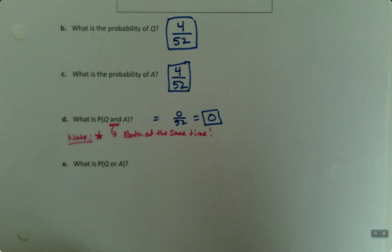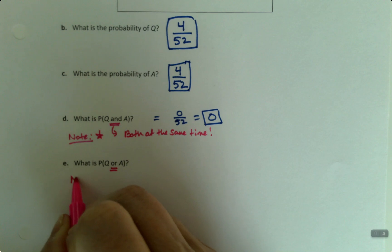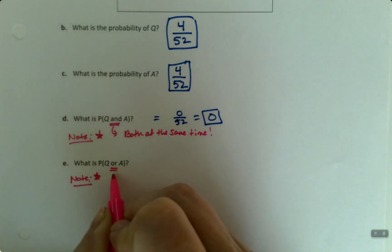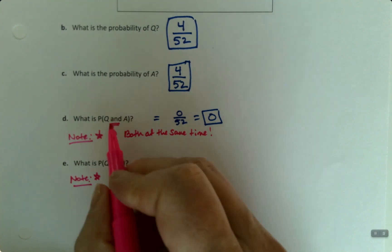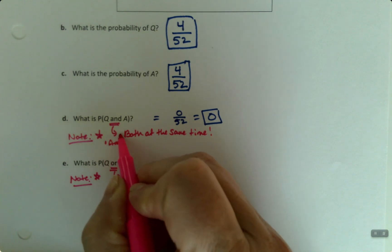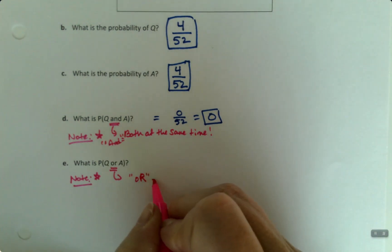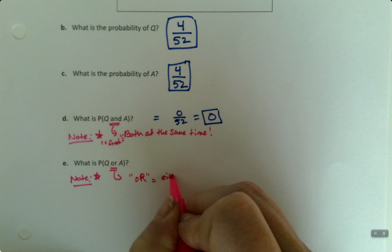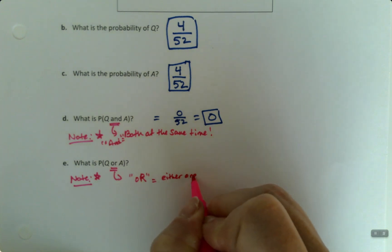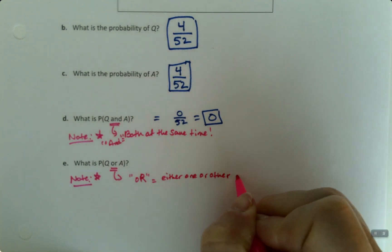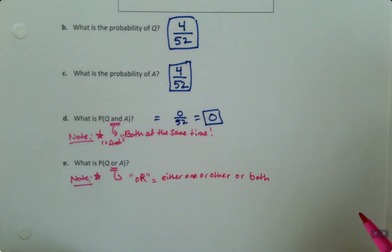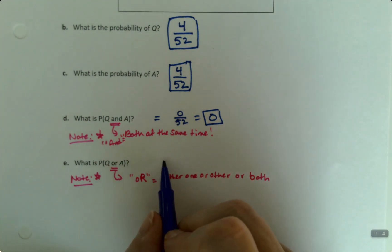So then, or. Note: And in statistics means both at the same time. Or means either one or the other or both, although both is impossible in this case. So that's the one that we're going to use the probability rule up above for.